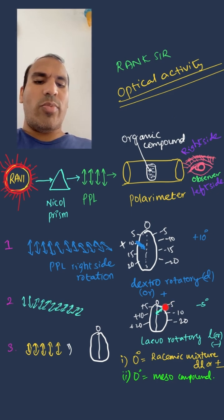In case it's not rotated, that is called zero degrees. Then it is called racemic mixture or meso compound.